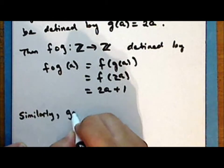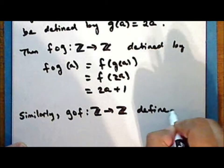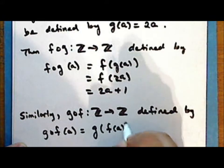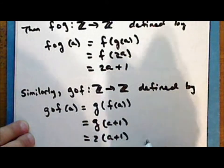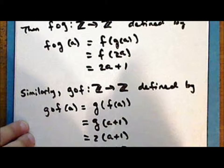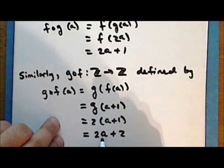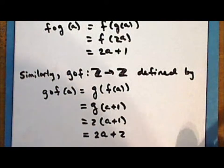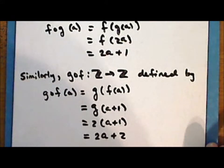Similarly, the composition g∘f is a map from the integers back into itself defined by g∘f(a) = g(f(a)) = g(a + 1) = 2(a + 1) = 2a + 2. So g∘f first augments the element by 1 and then multiplies by 2. Notice that even though both compositions f∘g and g∘f are defined, they are not equal.